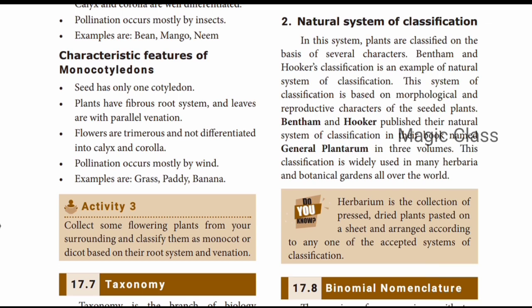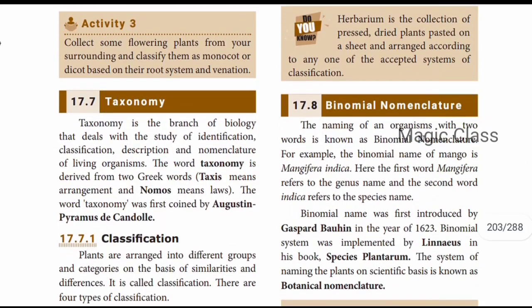Bentham and Hooker's classification is a natural system widely used in many herbaria and botanical gardens all over the world. It is based on morphological and reproductive characters of seeded plants. Bentham and Hooker published their natural system of classification in the book named 'Genera Plantarum.'